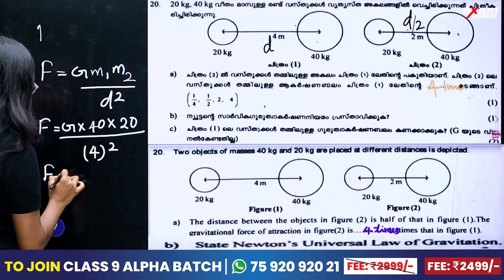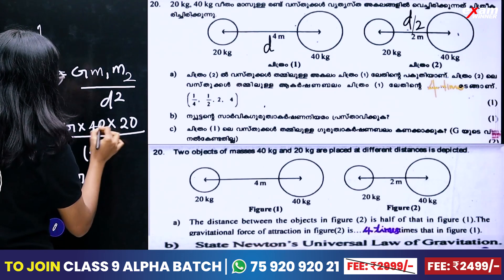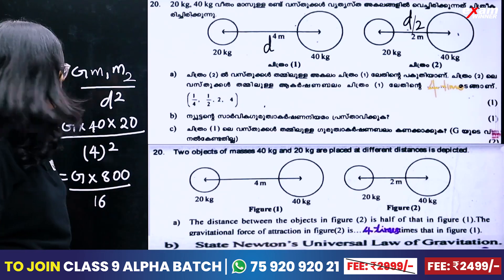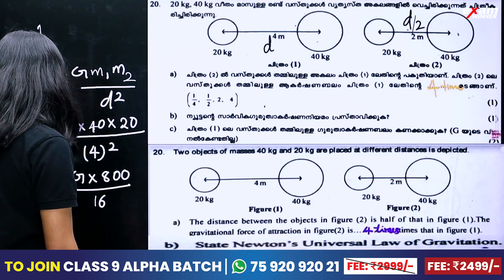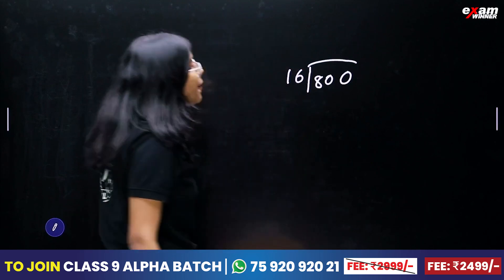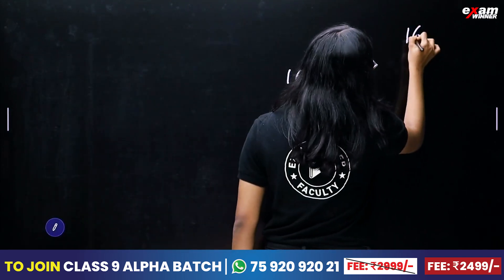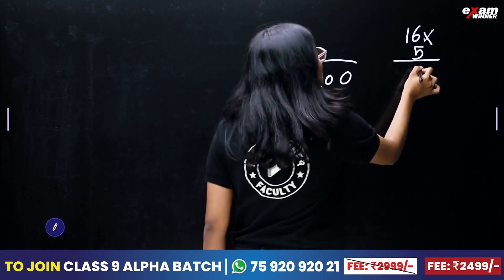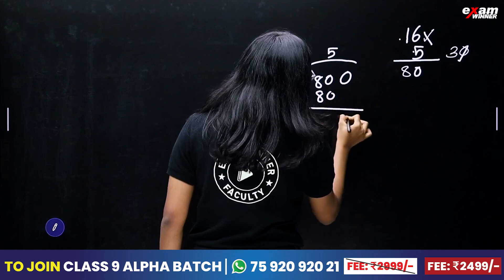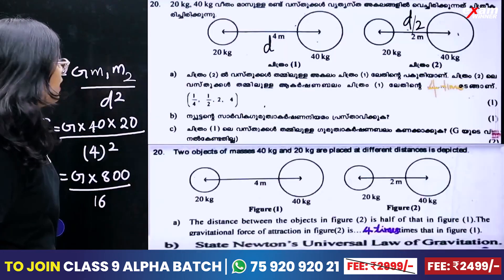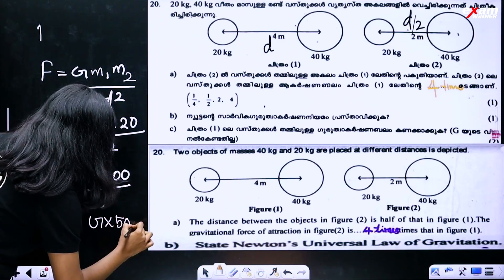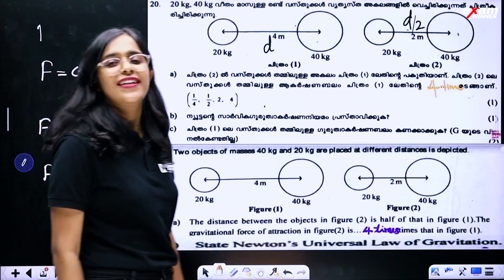F is equal to G into 4 divided by 8 divided by 14. G into 800 by 16. The result is F is equal to G into 50. F is equal to G into 50 Newton. Answer is clear.